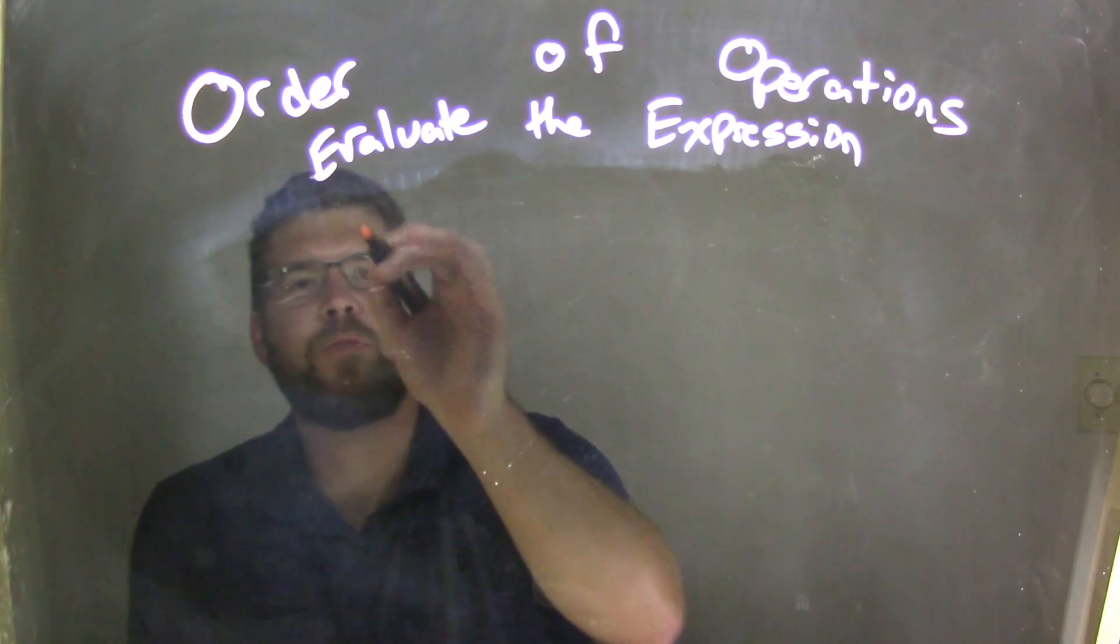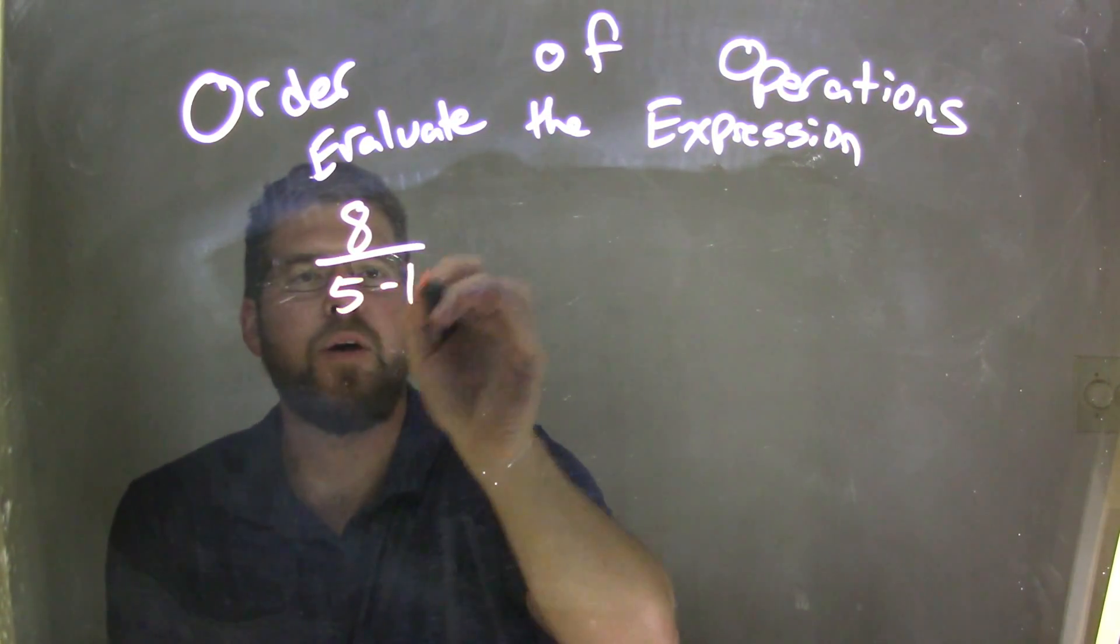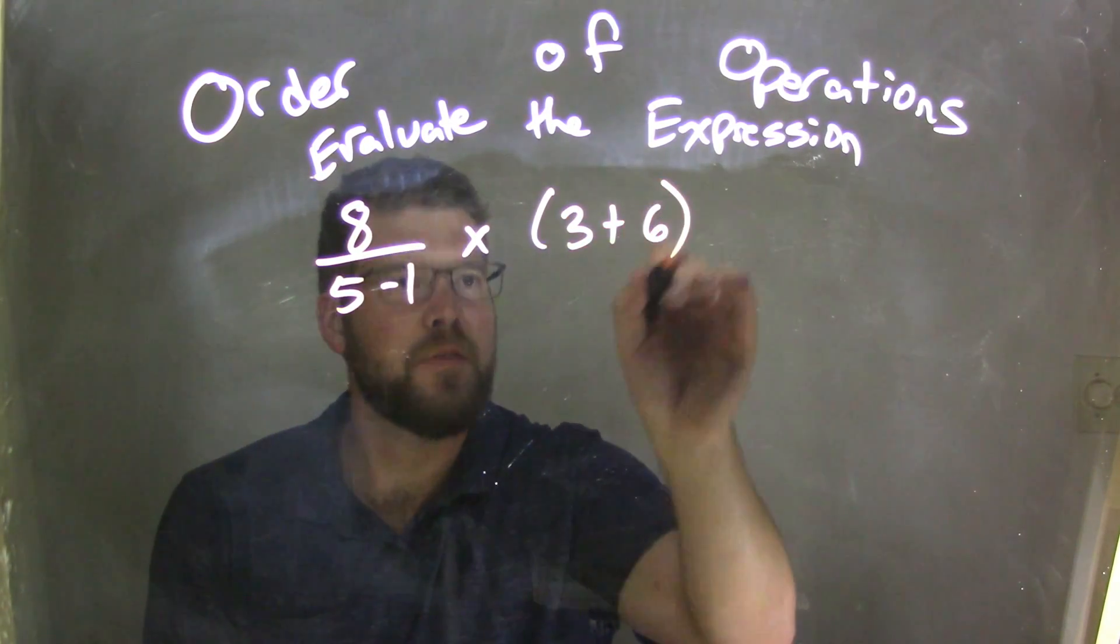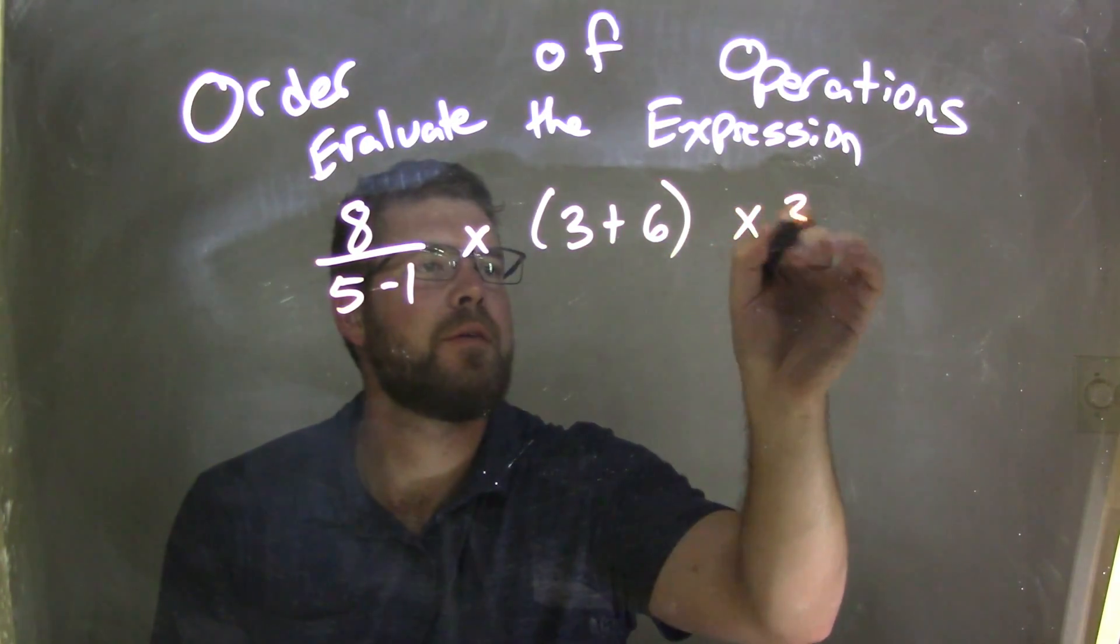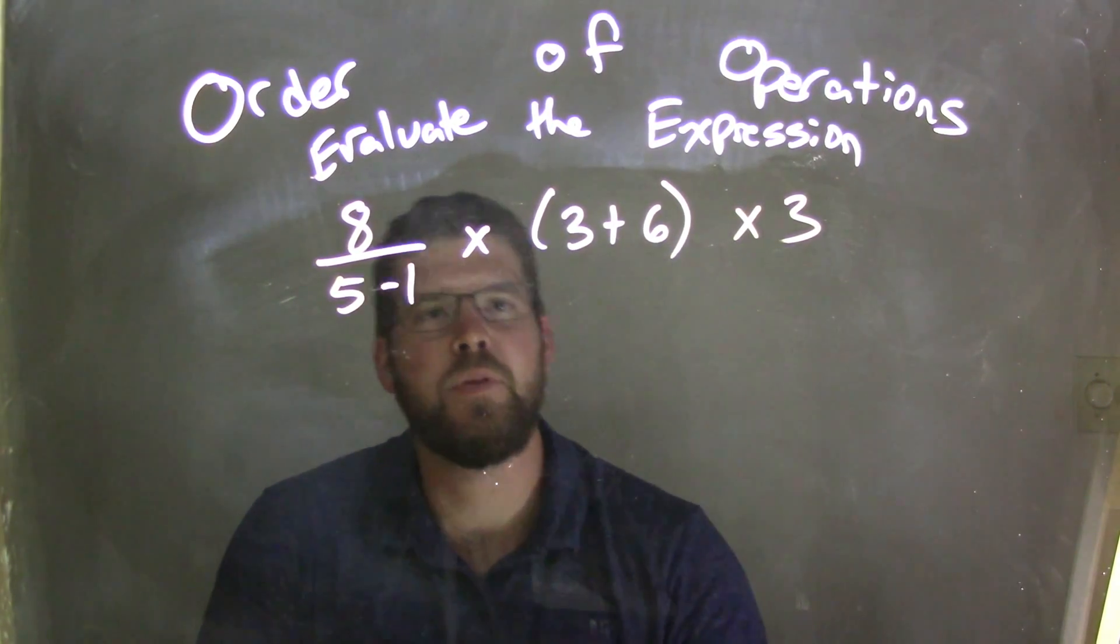So if I was given this expression, 8 over 5 minus 1 times 3 plus 6 times 3, and I wanted to evaluate it using the order of operations, I would think about a few things.